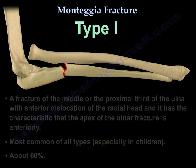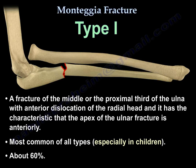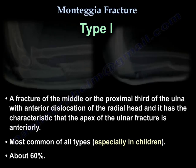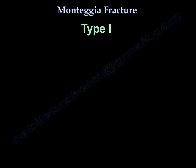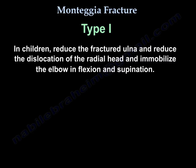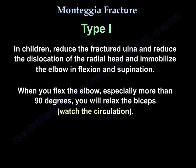Type 1: fracture of the middle or proximal third of the ulna with anterior dislocation of the radial head. The apex of the ulnar fracture is anteriorly. It is the most common of all types, especially in children, at about 60%. In children, reduce the fractured ulna and reduce the dislocation of the radial head, then immobilize the elbow in flexion and supination. When you flex the elbow more than 90 degrees, you will relax the biceps.